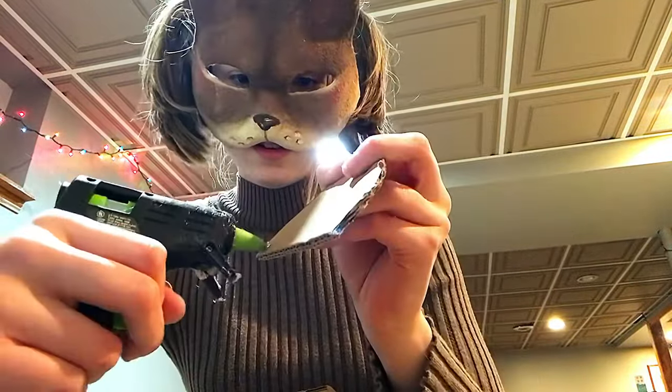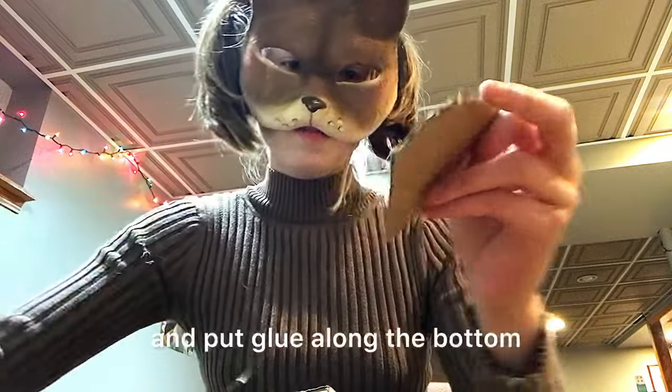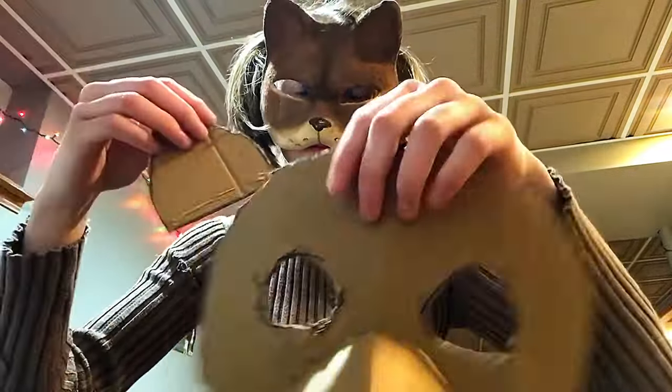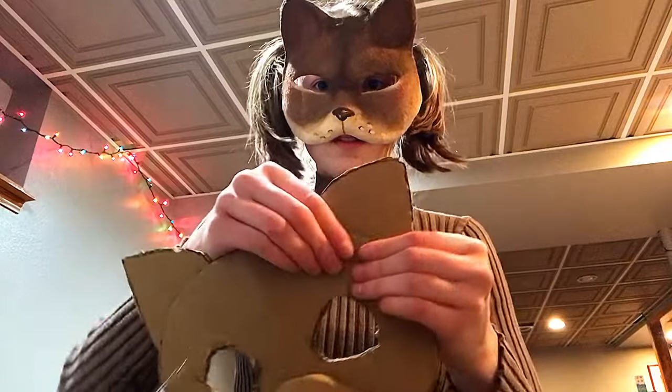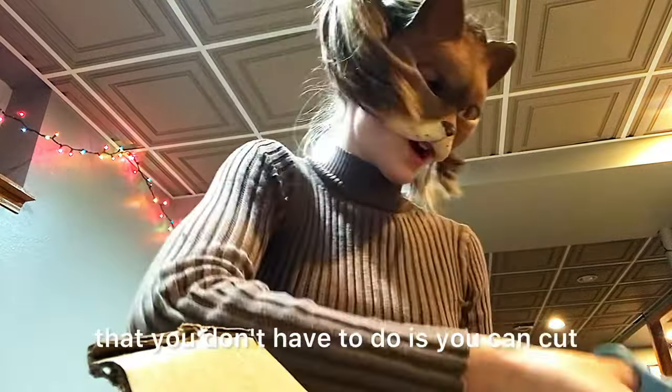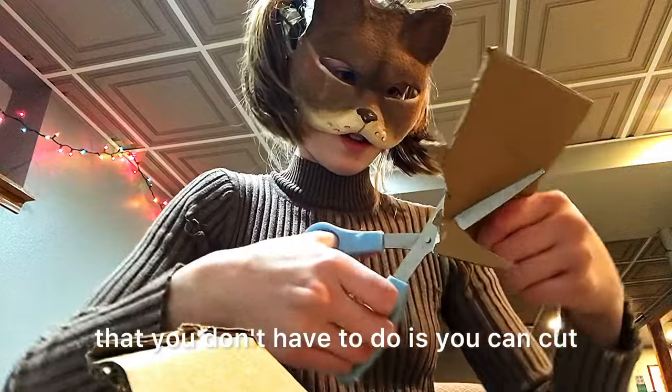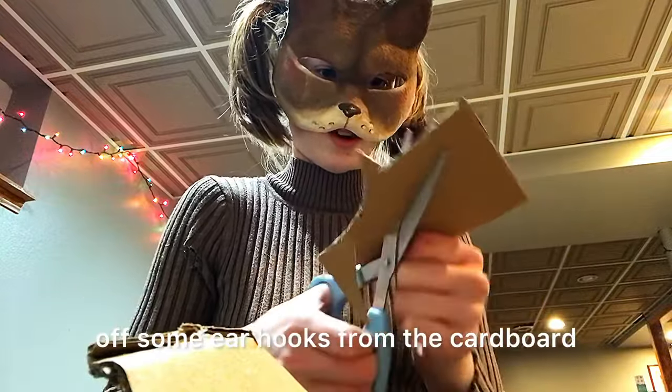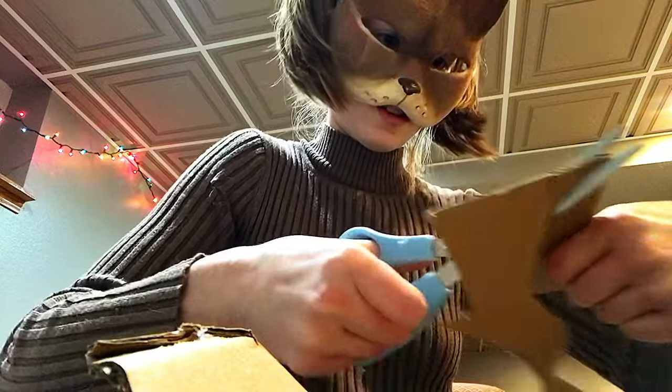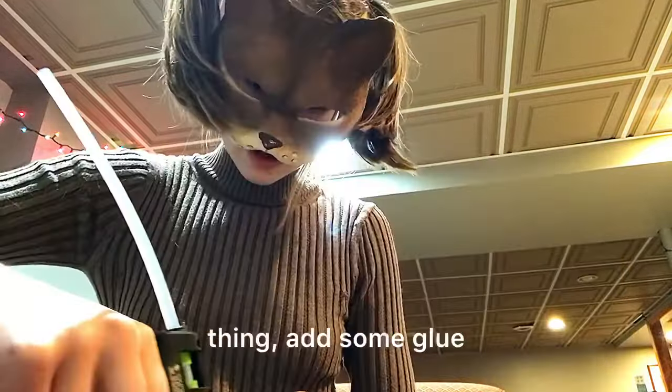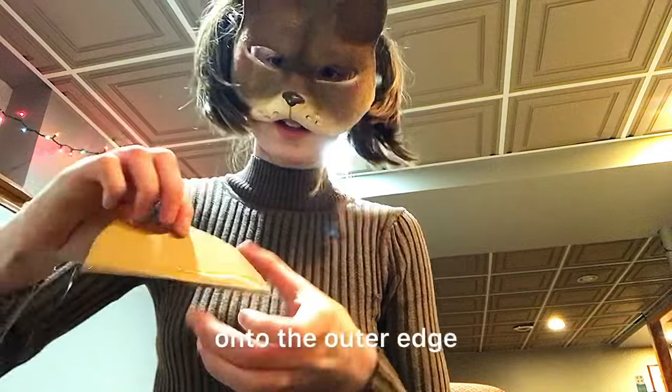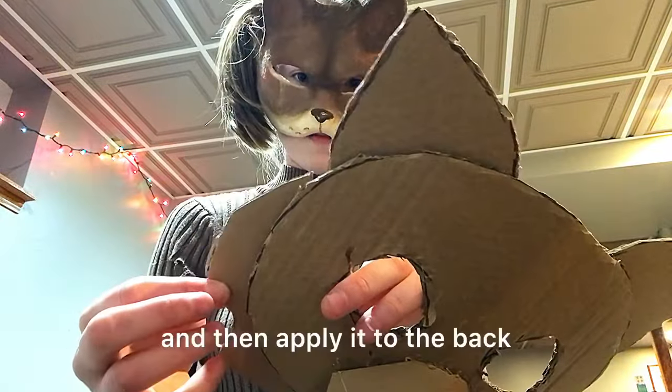I'm going to take the ear, the first ear here, and put glue along the bottom in the correct direction, like they're on the right side. An additional step that you don't have to do is you can cut off some ear tufts from the cardboard and add it to the sides if you want. So, I'm going to do that. Okay, two of these. Same thing. Add some glue onto the outer edge, and then apply it to the back.